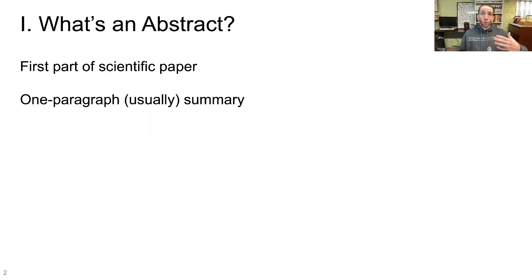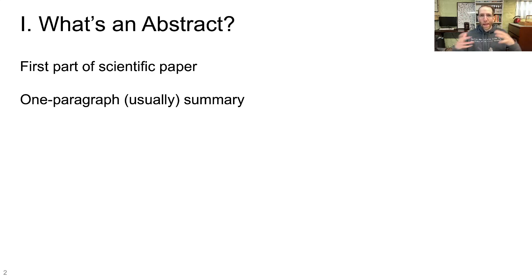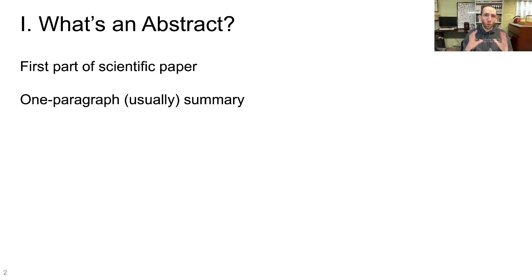Before we get into the actual trick that creationists do here, we have to establish a baseline. What is an abstract in a scientific paper? When you're doing scientific writing, typically the research papers that go through the peer review process and get published in journals have a set structure. They always have the same parts: an abstract, an introduction, a method section where you describe what you did, the results, and the discussion, which is kind of your conclusion in the broader context.